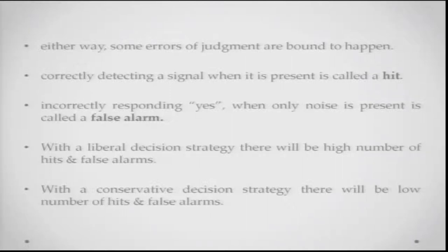Anyways, with this distribution there will be some errors of judgment. If you detected the correct signal, this is called a hit. If you incorrectly responded yes where there was no signal, that scenario is called a false alarm. If you follow a very liberal decision-making strategy, you will have a lot of hits but also a lot of false alarms because your tendency is to say yes to most responses. On the other hand, if you follow a conservative decision strategy, there will be a low number of hits and also a low number of false alarms, but you will have a lot of misses because you did not say yes even when the signal was there.